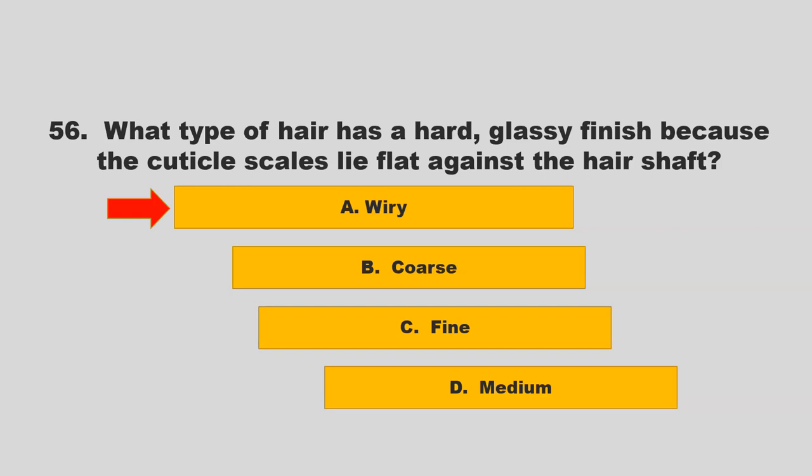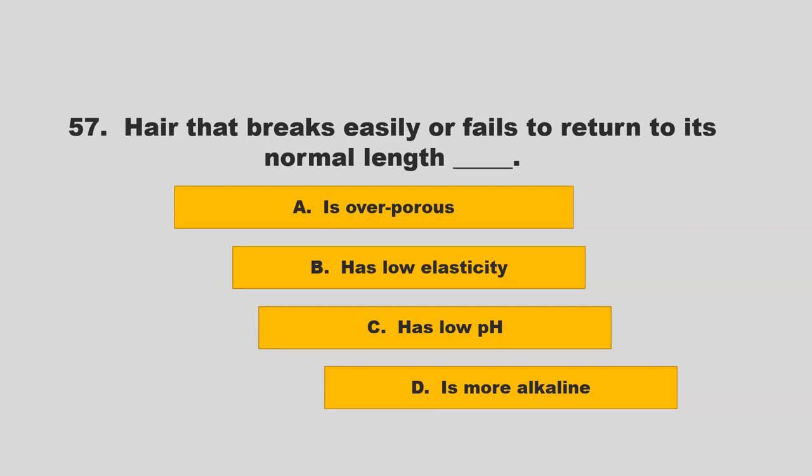Hair that breaks easily and fails to return to its normal length blank. Is it overporous, has low elasticity, has low pH, or is more alkaline? If you chose B, has low elasticity, you are correct.